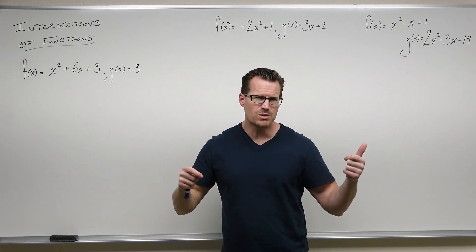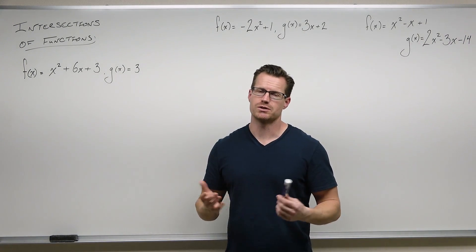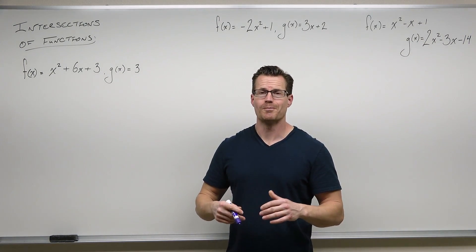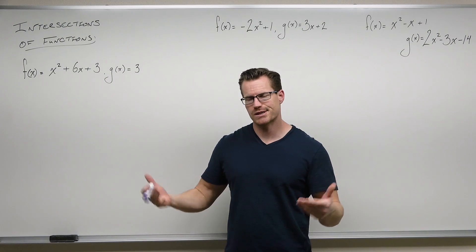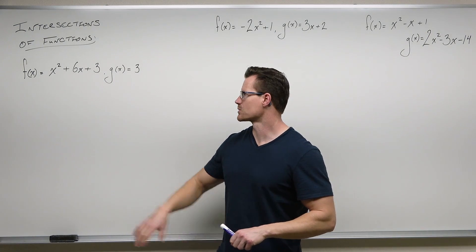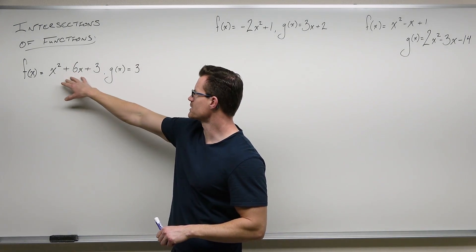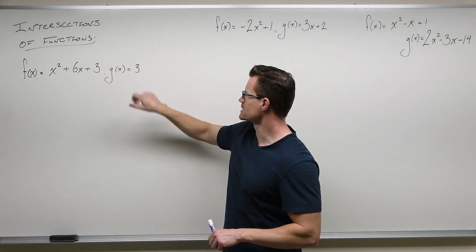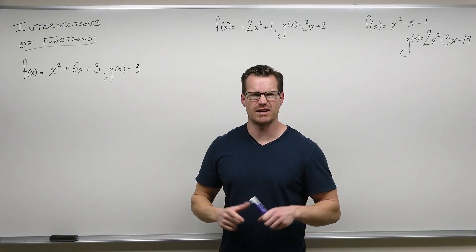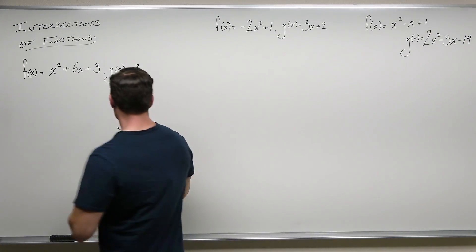And by doing that, we find out the points of intersection on two functions. So in other words, just set them equal. When this function equals this function, we're going to have an intersection.